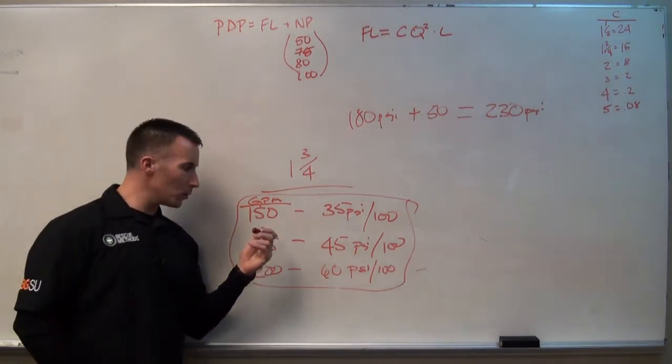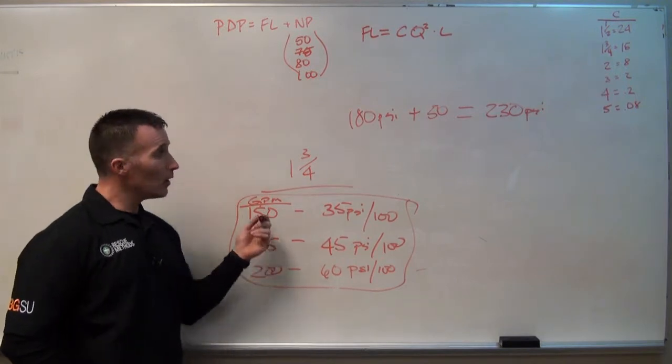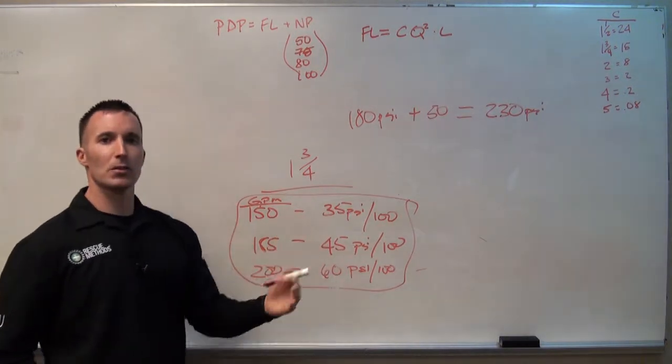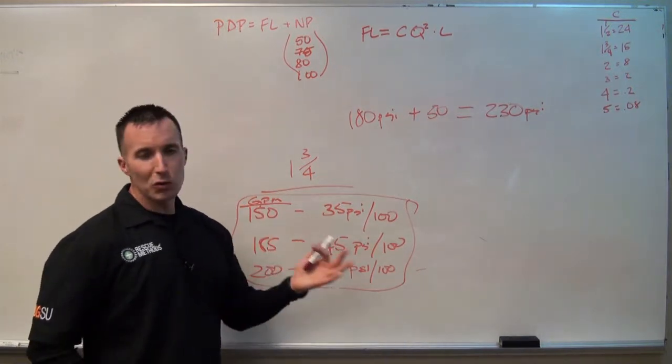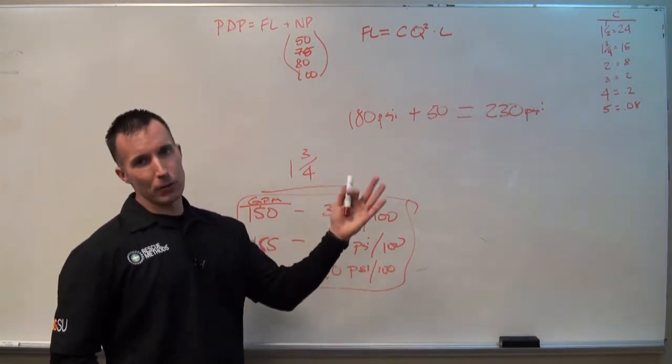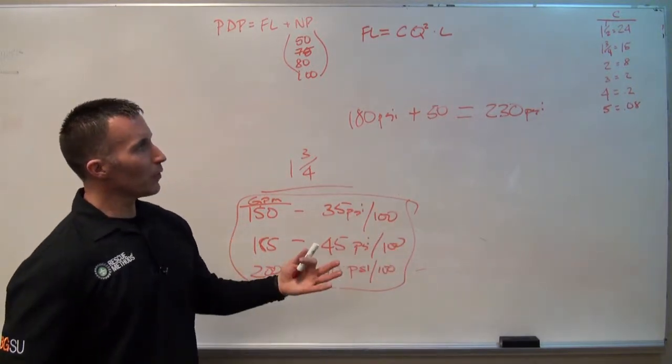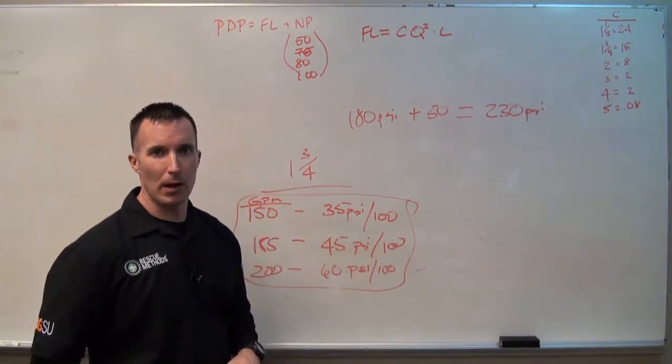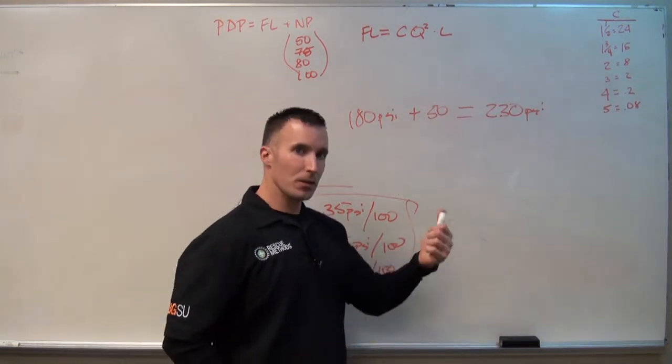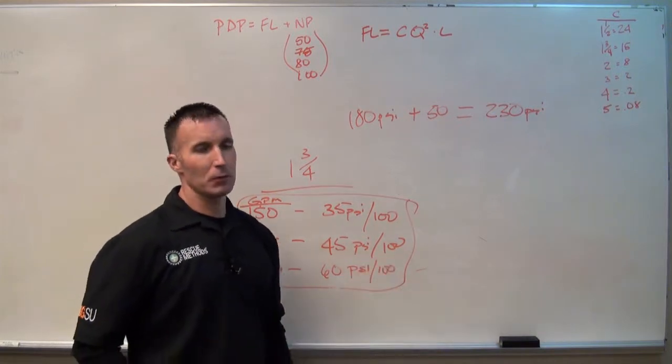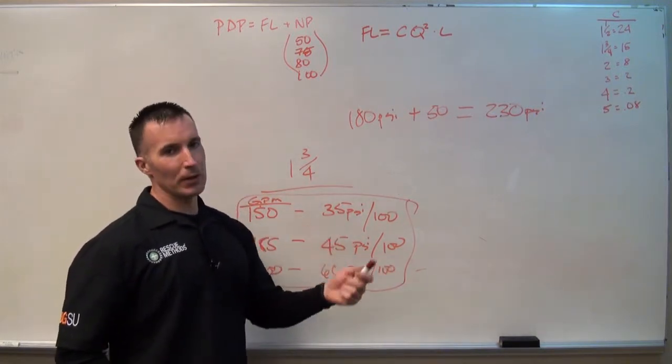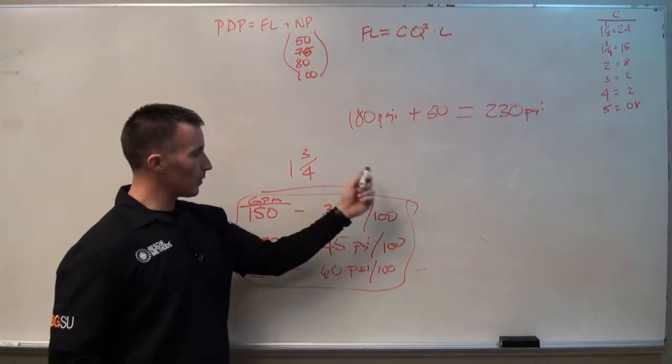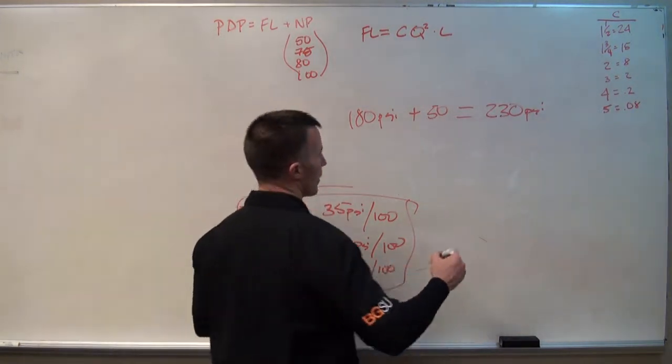What I'm saying is that utilizing these quick reference numbers, and if you do enough of these equations and start to break these down a little bit, you can identify these constants based on each size hose. Why would we want to do that? Well, most departments don't really use five or six different sizes of hose. Most of us are using one size of a small attack line, a two and a half, and generally some type of supply.